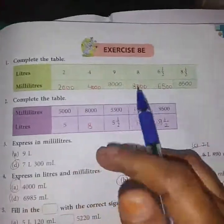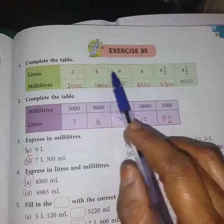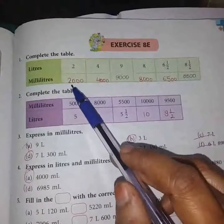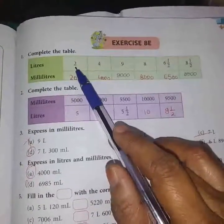Now we will start with exercise 8E. Here we are given a table and we have given the measurements in liters. We have to convert it into milliliters. See here the first question is 2 liters.